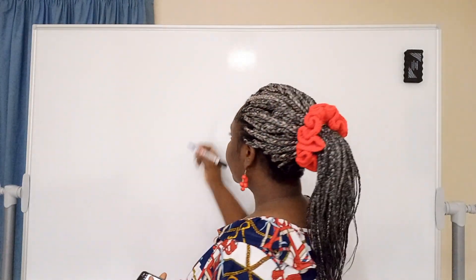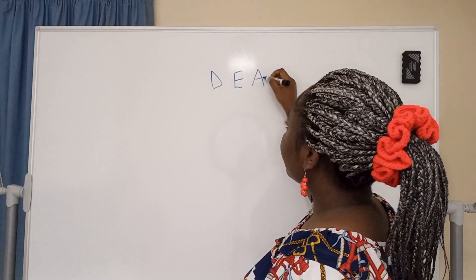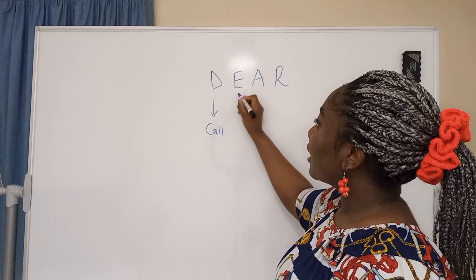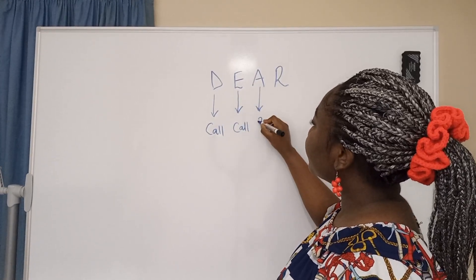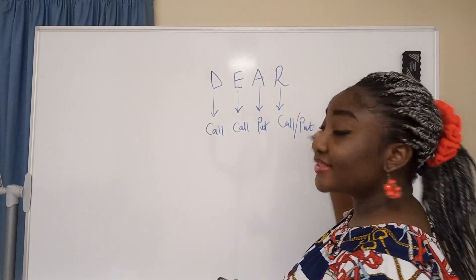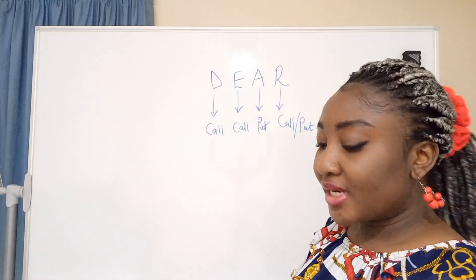In our last class, we started application of option pricing in investment appraisal, which led us to talking about the four real options: delay, expansion, abandonment, and redeployment. We said delay is a call option, expansion is a call option, abandonment is a put option, and redeployment is a call or put option depending on what you use the excess or underutilized resources for.